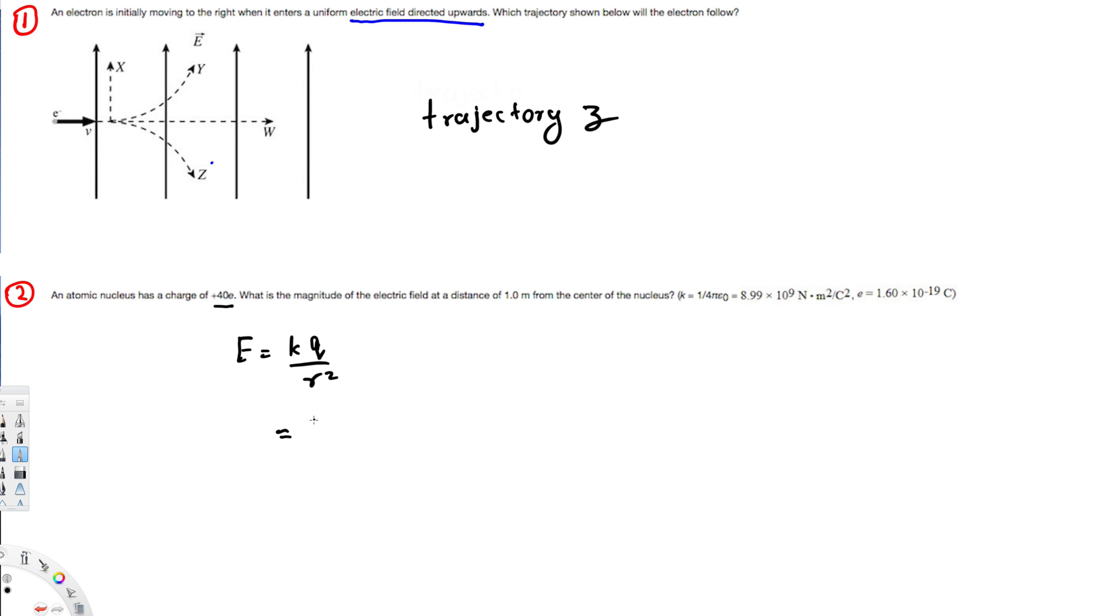We have r and q, so we can directly find it. So k is basically 9 times 10 to the power of 9 newton meter squared per coulomb squared, times q.